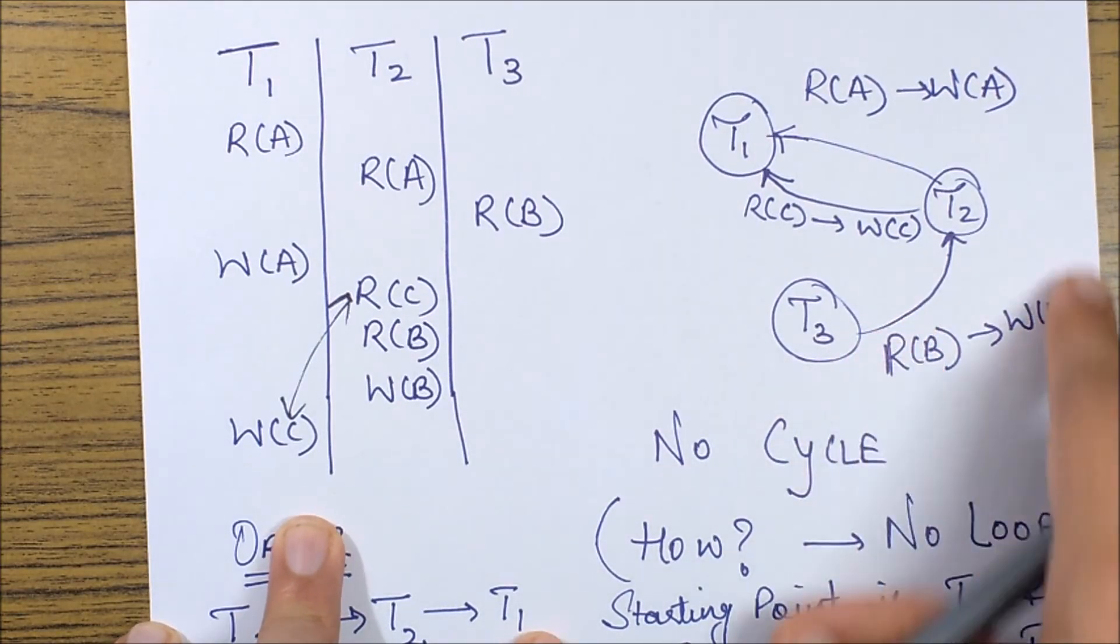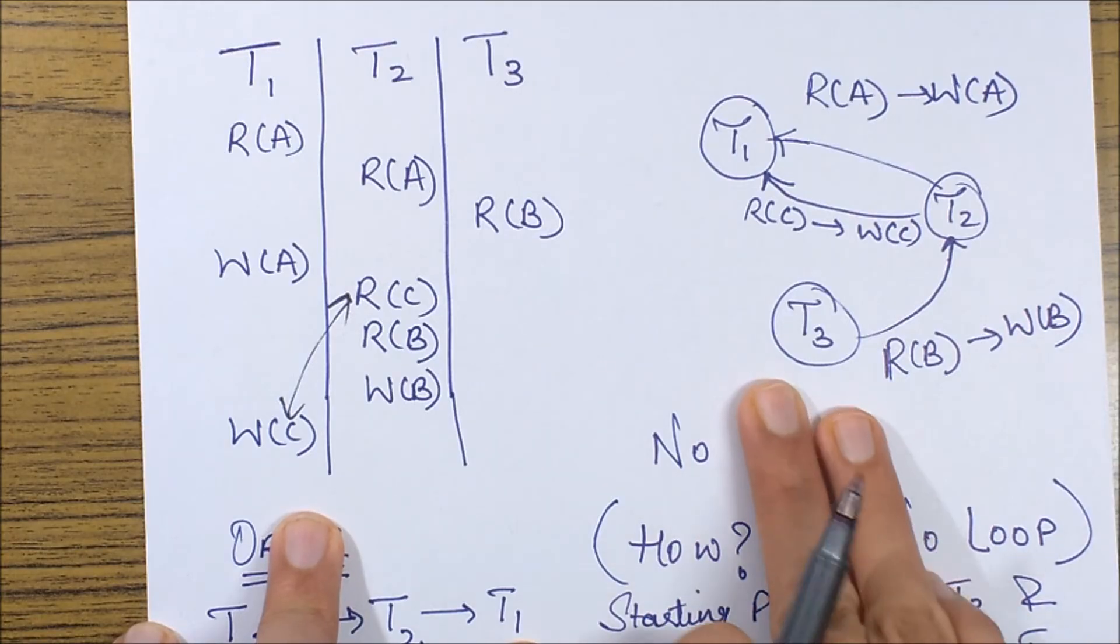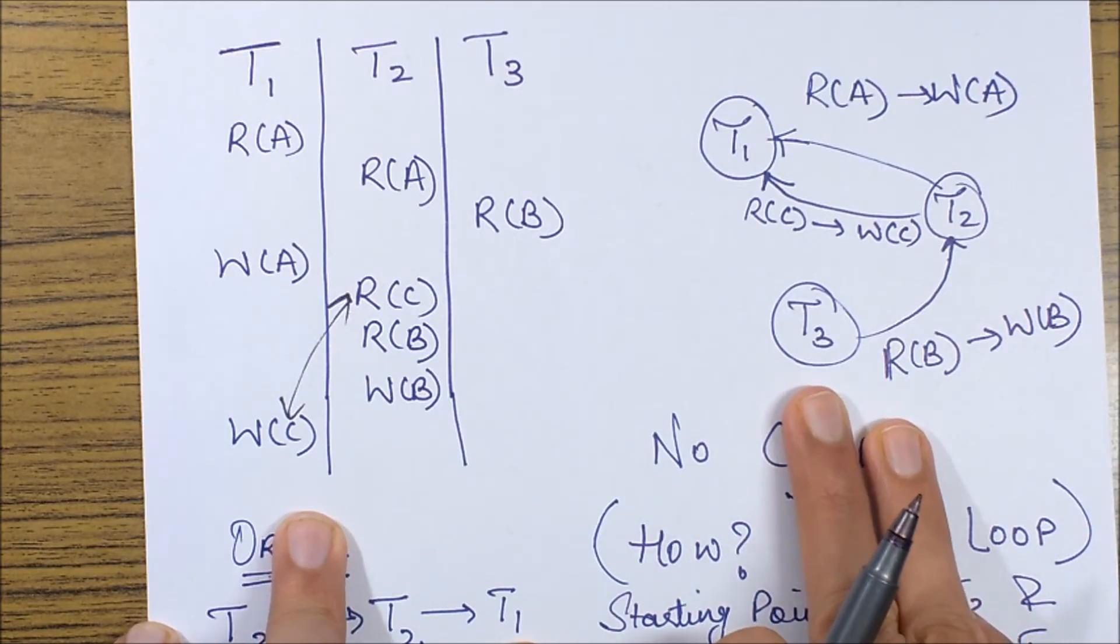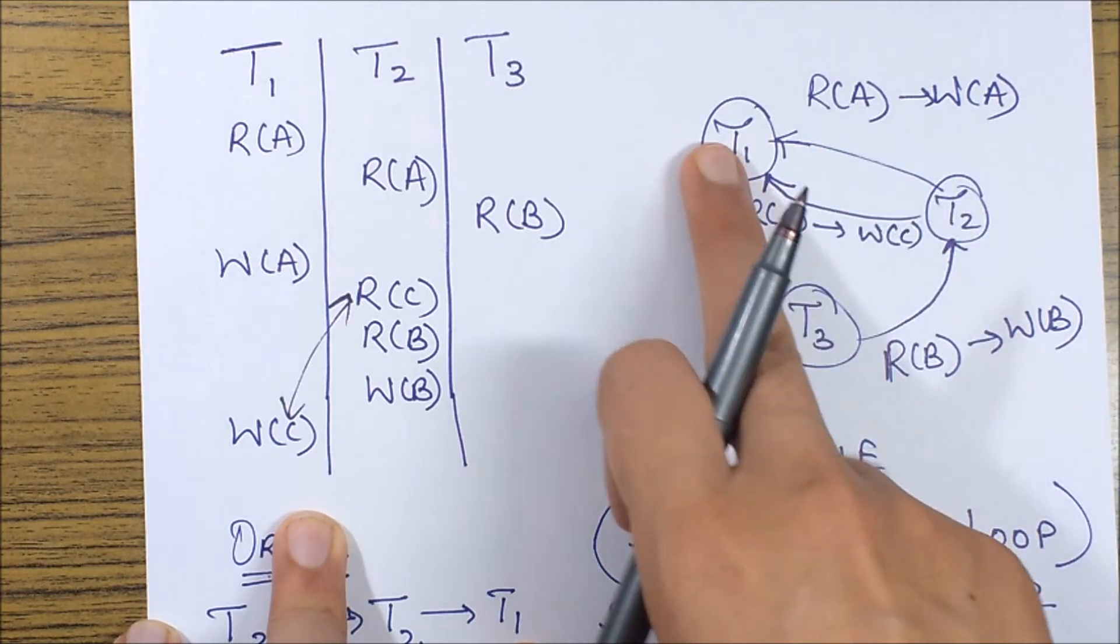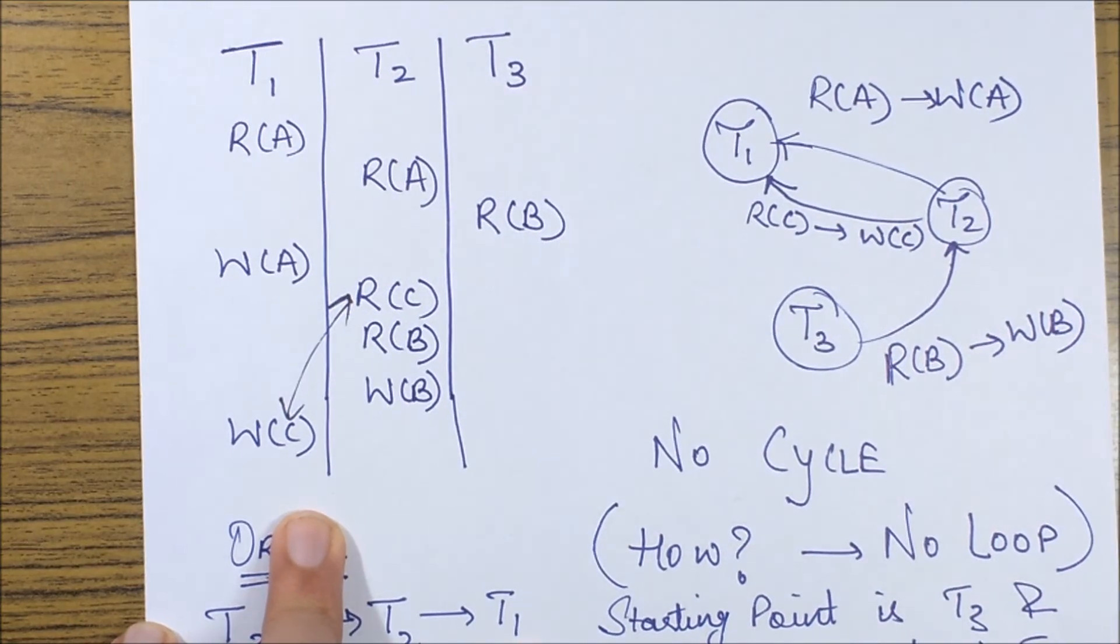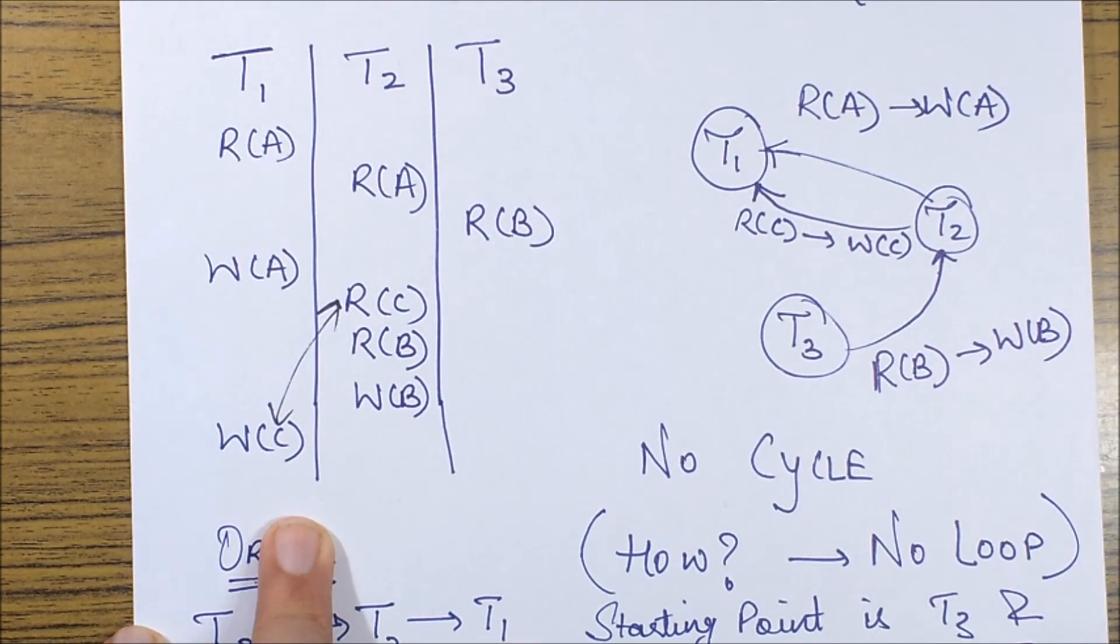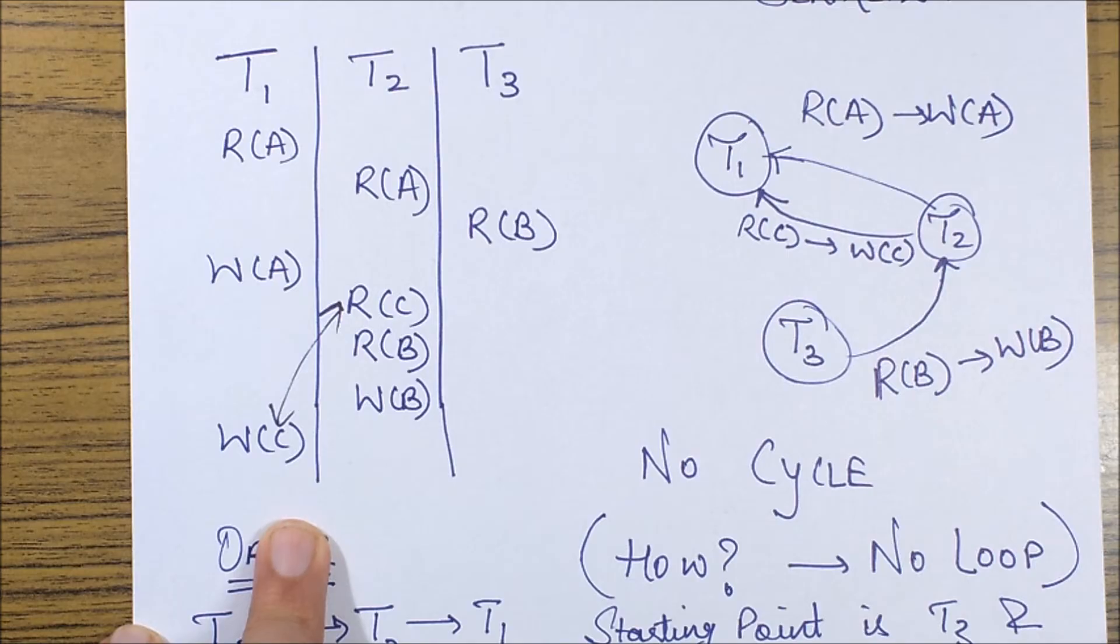So now that we have our precedence graph over here let's just analyze it. If I analyze it I know that there is no cycle being formed. See this is not a cycle why because both the edges are in the same direction, we are going from T2 to T1. We are not coming back, we are not landing on the same point. So therefore this is not a cycle and now since this is not a loop that means this is a serializable schedule.